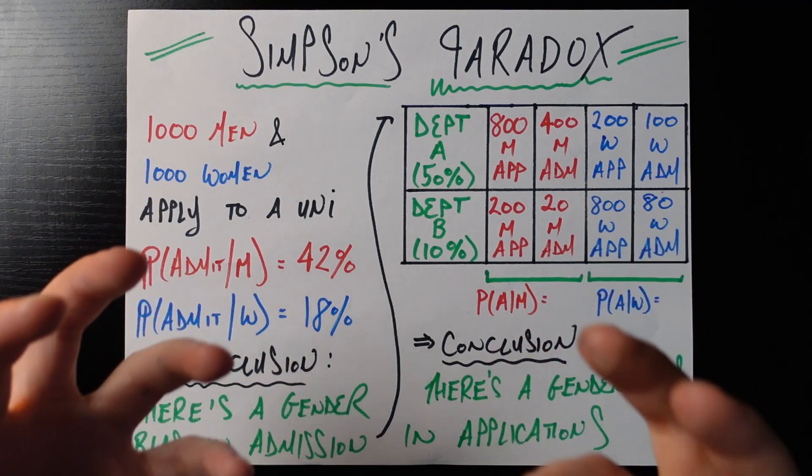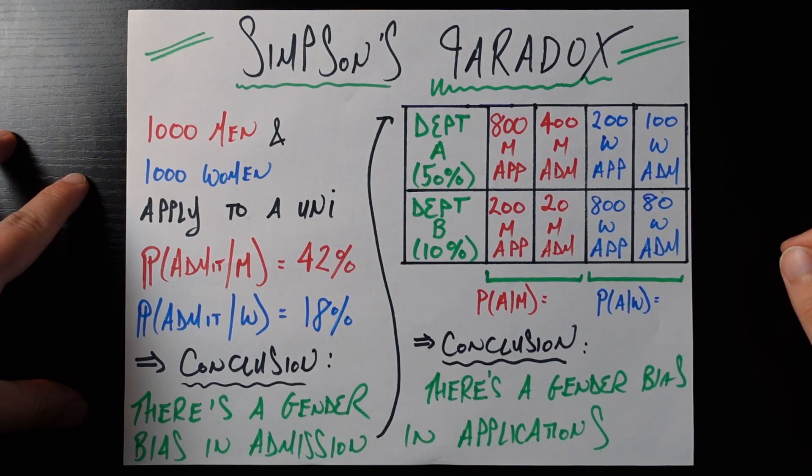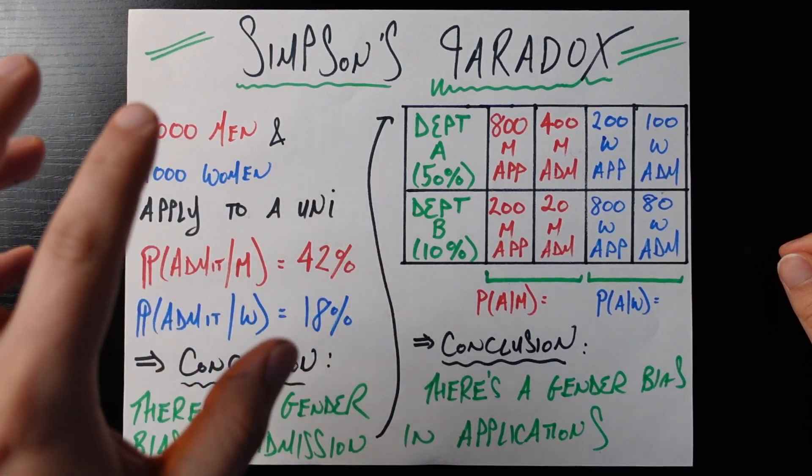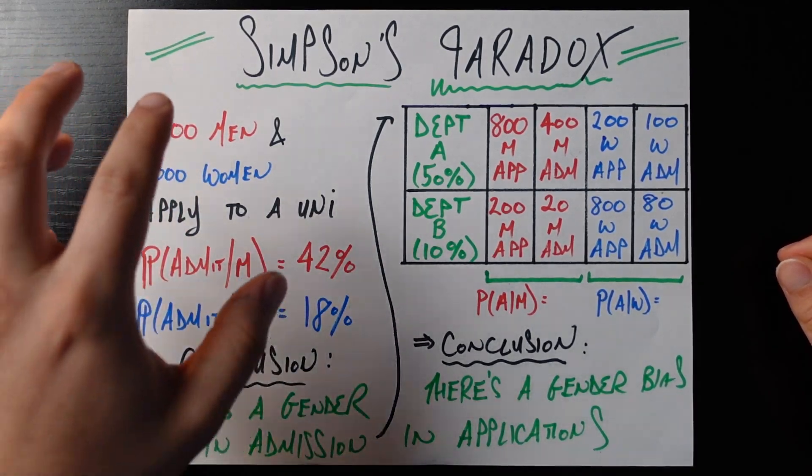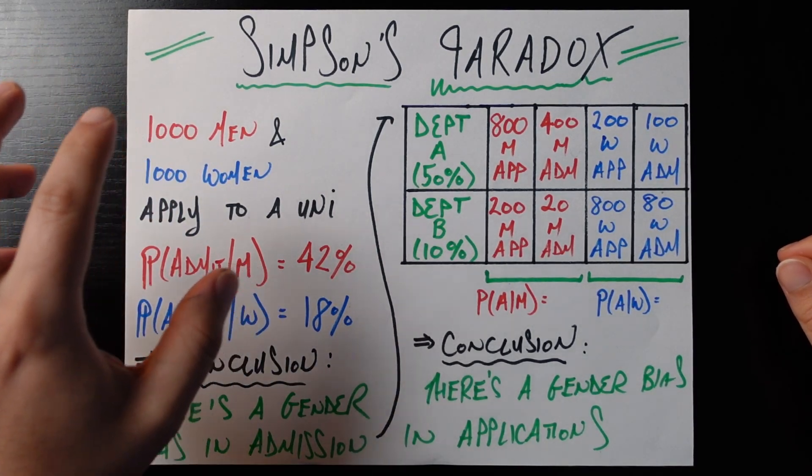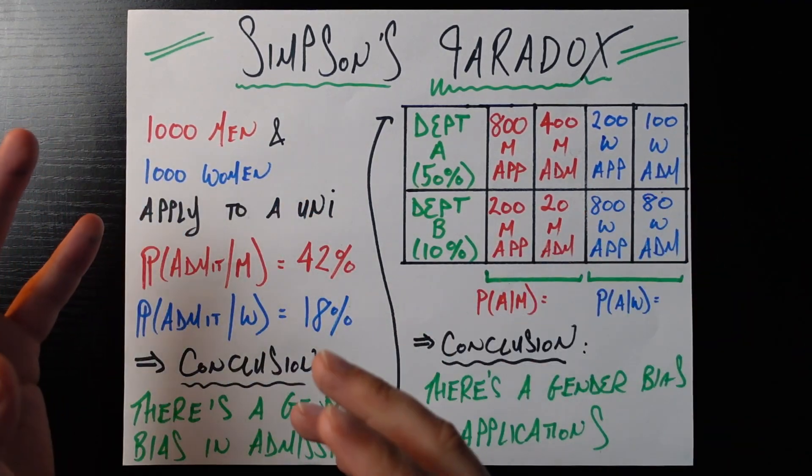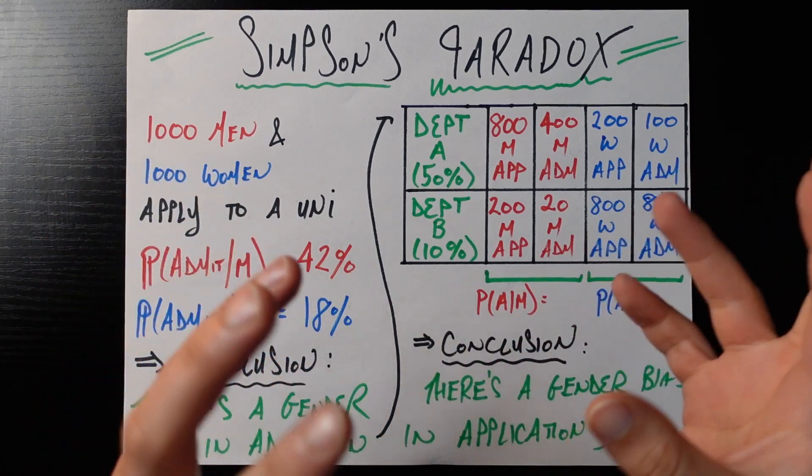But first, let's get into one example of Simpson's paradox. This first example is based on probably the most popular example of Simpson's paradox, which is the UC Berkeley gender bias in admissions data set. We're using a slightly modified, easier to understand version of that. But the real situation is pretty much identical to this, just with different numbers.